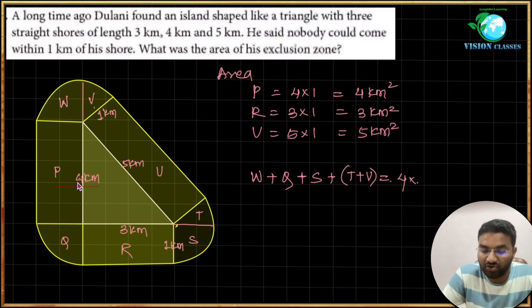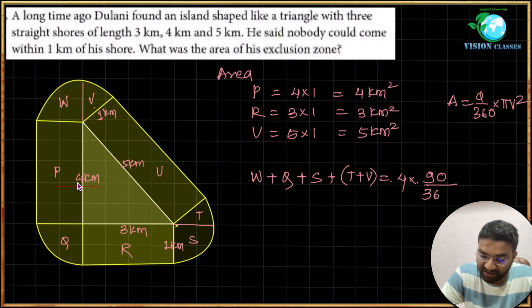Then you have W plus Q plus S plus T and V. I will just put a bracket like this. They all combine together, it's four quarters. So four quarters times θ by 360, means 90 by 360. We have to use this area of sector is equal to θ upon 360 times π r squared.